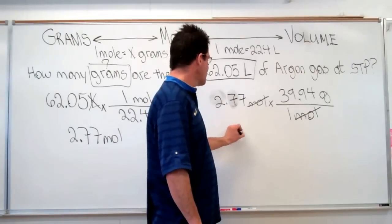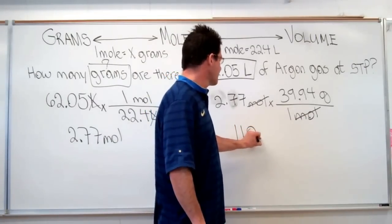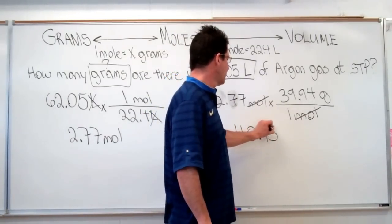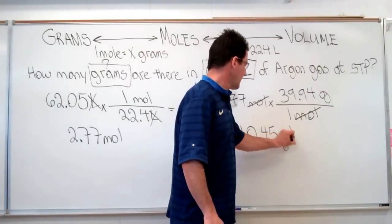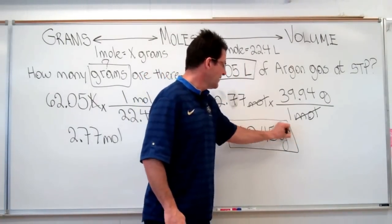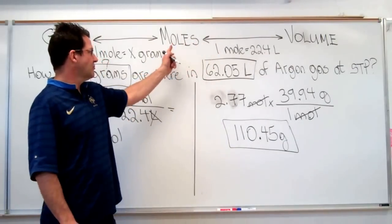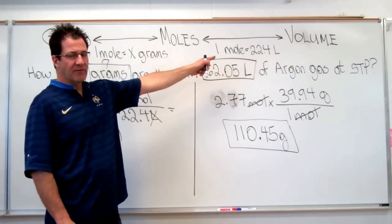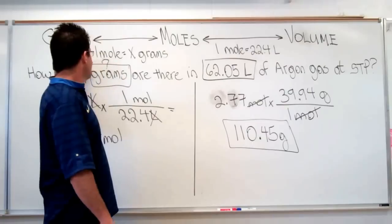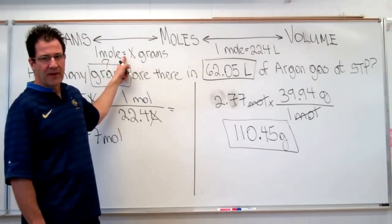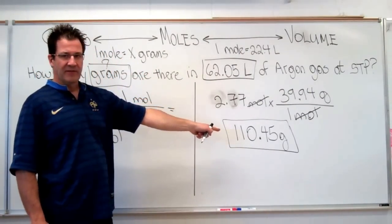2.77 times 39.94, and we will come up with the mass of that much argon gas. In this case, the mass is 110.45 grams. All right. That's our conversion. It was a two-step conversion: volume to moles using the molar volume of gas, and then moles to grams using the molar mass of argon. That's our answer.